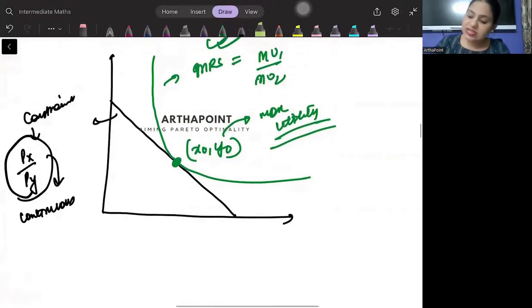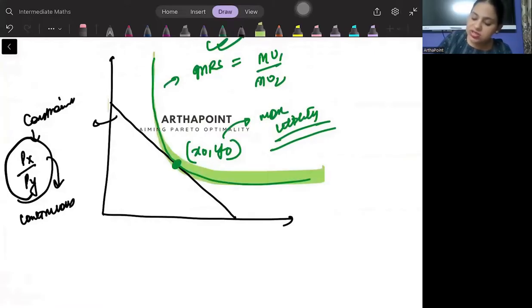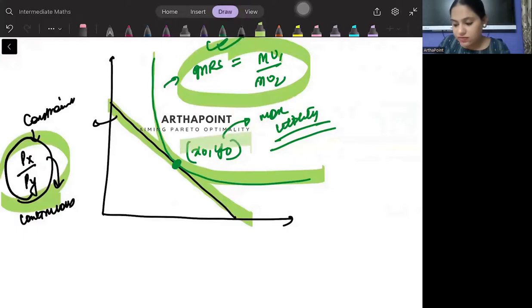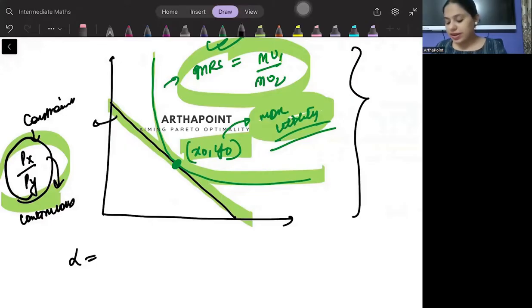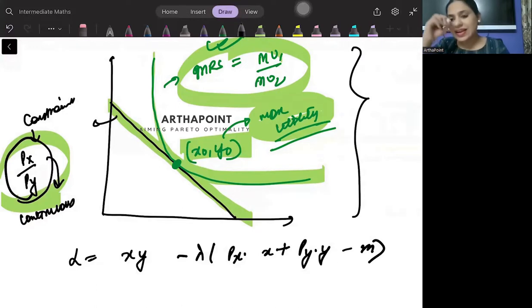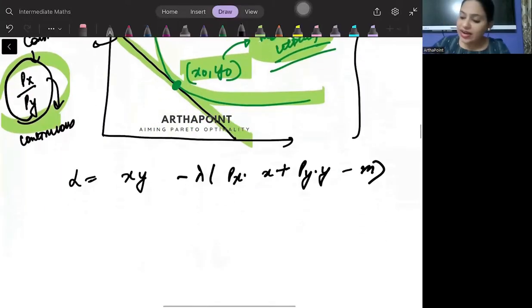To bata, is case mein, because it is continuous, this is continuous, the slopes are well defined. I have a point which maximizes my utility. Is case mein, mein Lagrange set up kar sakti ho. I can go ahead and I can form a Lagrange that, okay, I want to maximize my utility subject to my budget constraint. Aisa mein ek Lagrange set kar sakti ho. And I can also get some value of lambda here.